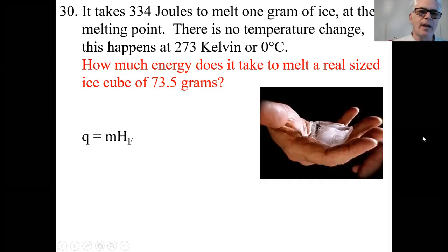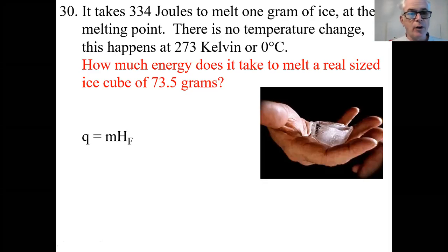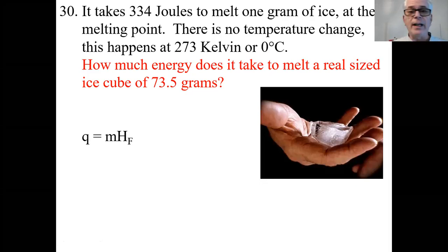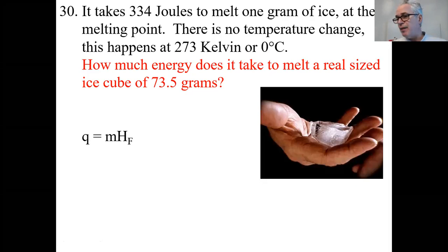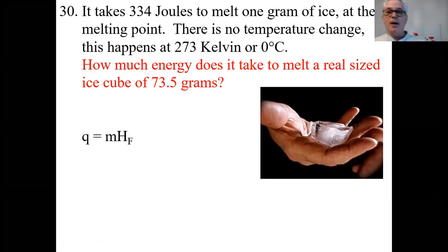Hey kids, Charlie Abuso here again. We're going to do thermochemistry zoom number two for class number two. We're going to do the notes from number 30 to number 52. This should be pretty short. You're going to need a calculator. You're going to need your reference table — I have mine right here — and I'm going to use my cell phone calculator, but you better have a calculator.